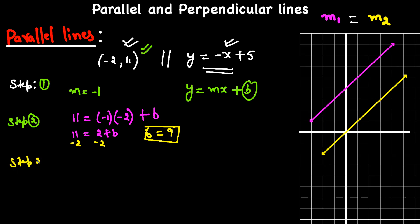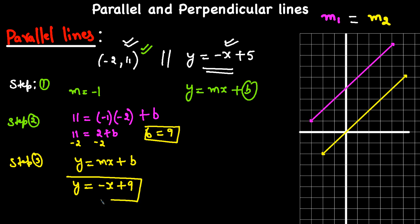Step 3: write the equation. Using y = mx + b, with m = -1 and b = 9, we get y = -x + 9. So the steps are: step 1 find the slope, step 2 find the y-intercept, and step 3 plug in the numbers to write down the equation.